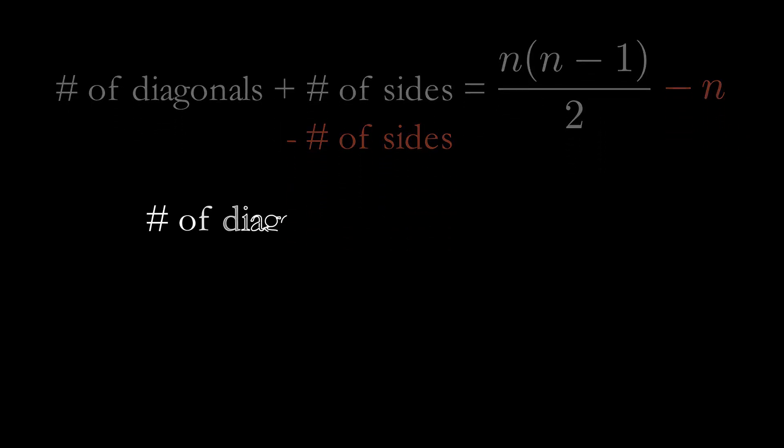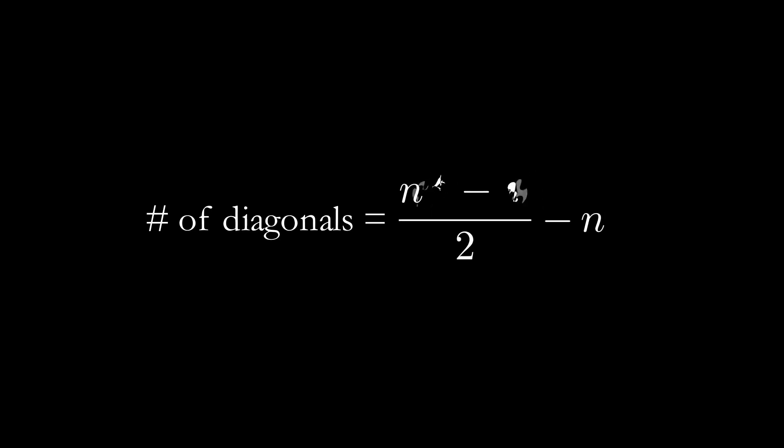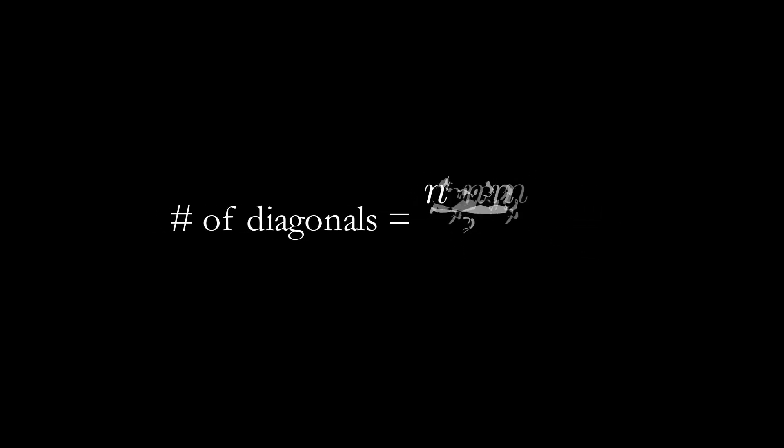Finally, doing some algebra shows us why the number of diagonals equals n times n minus 3 over 2. And there you have it. Thanks for watching.